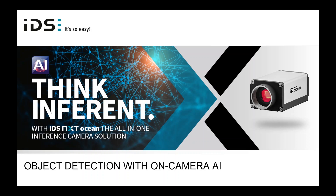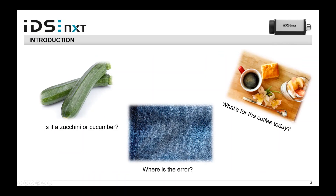Before we start, I would like to give you a short motivation of the topic of deep learning in general. Deep learning comes into play when rule-based machine vision reaches its limits — like the question: is this a zucchini or a cucumber? Both have the same shape, nearly the same size, the same color, and it's hard to define parameters to classify this vegetable.